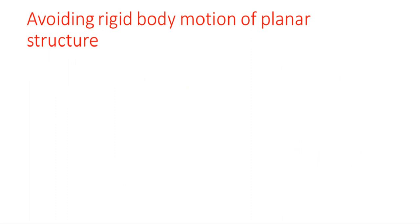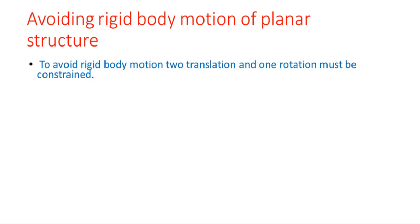In order to find stresses and strains, one needs to avoid rigid body motion. From the basic definition, strain is defined as the change in length of a fiber divided by the original length. But in the case of rigid body motion there is no change in length, so there is no deformation, which means no stress and strain. Therefore, to avoid rigid body motion, one needs to apply constraints so that all possible rigid body motions are eliminated.